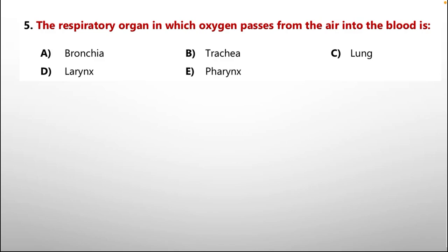Question number five: the respiratory organ in which oxygen passes from the air into the blood is — A: bronchia, B: trachea, C: lung, D: larynx, E: pharynx. In the breathing or respiratory process, the last organ is the lung, which takes oxygen from the air and passes it into the blood, which then flows through the whole body.